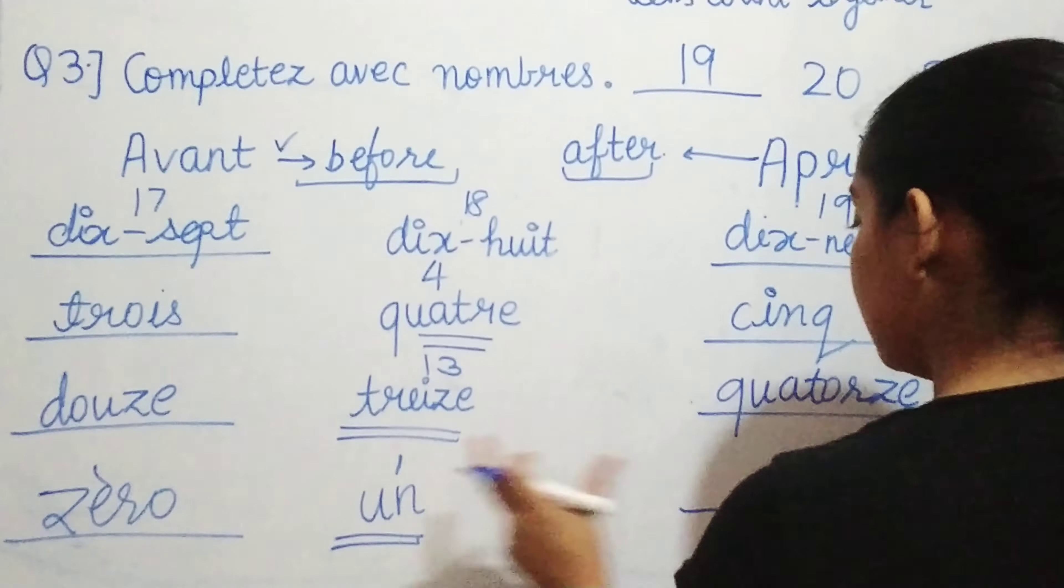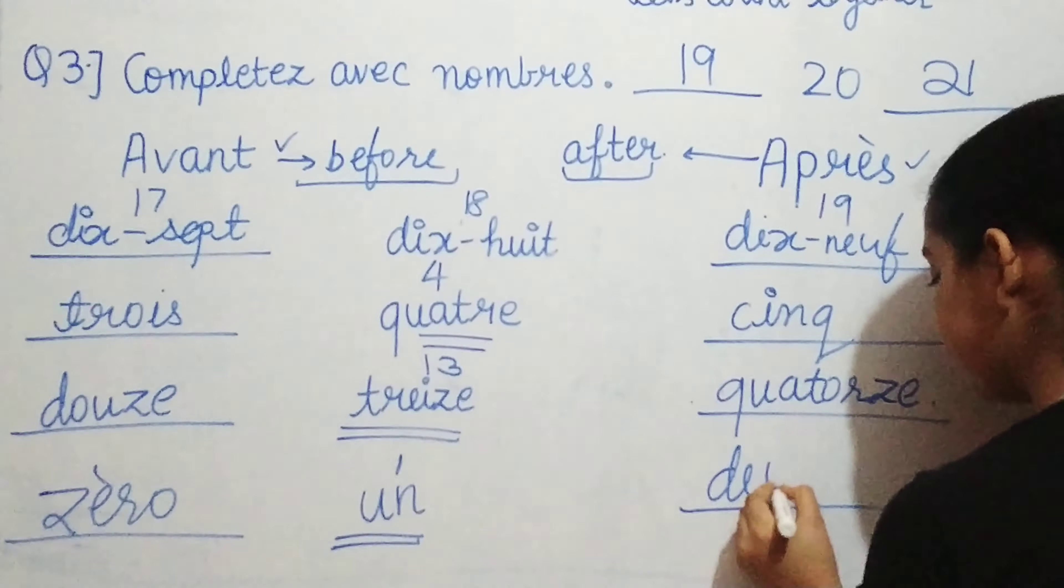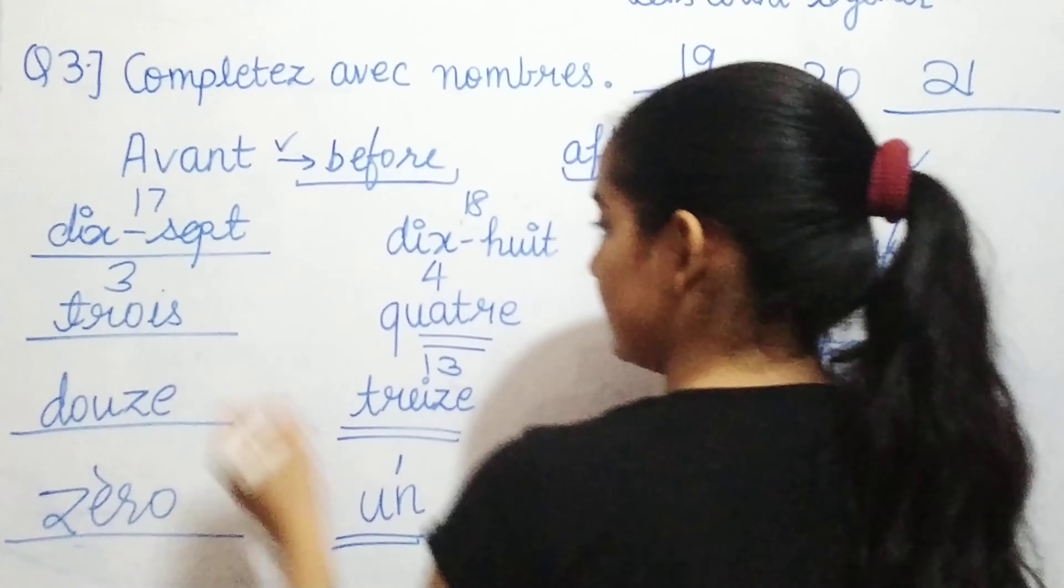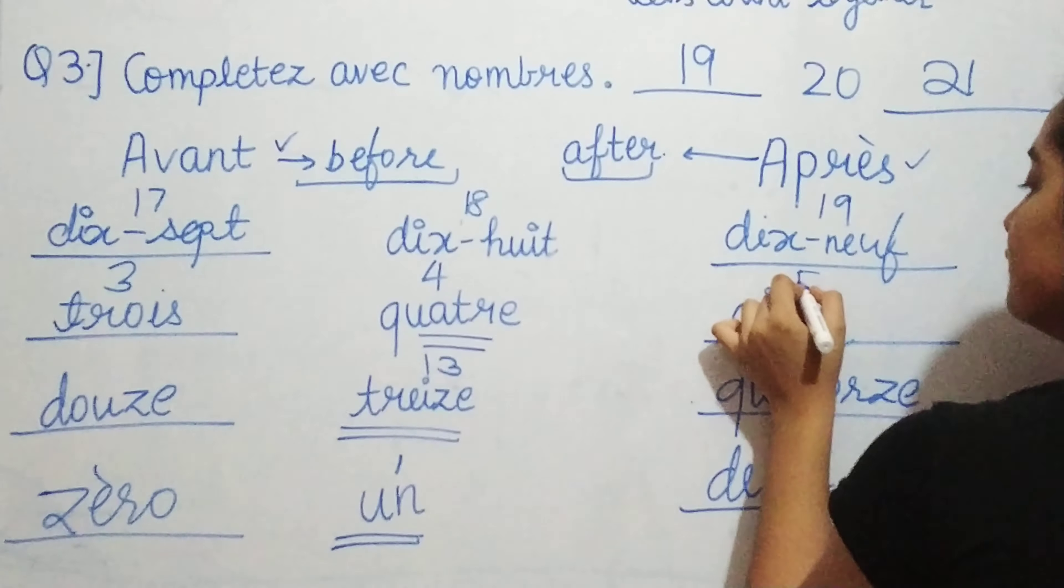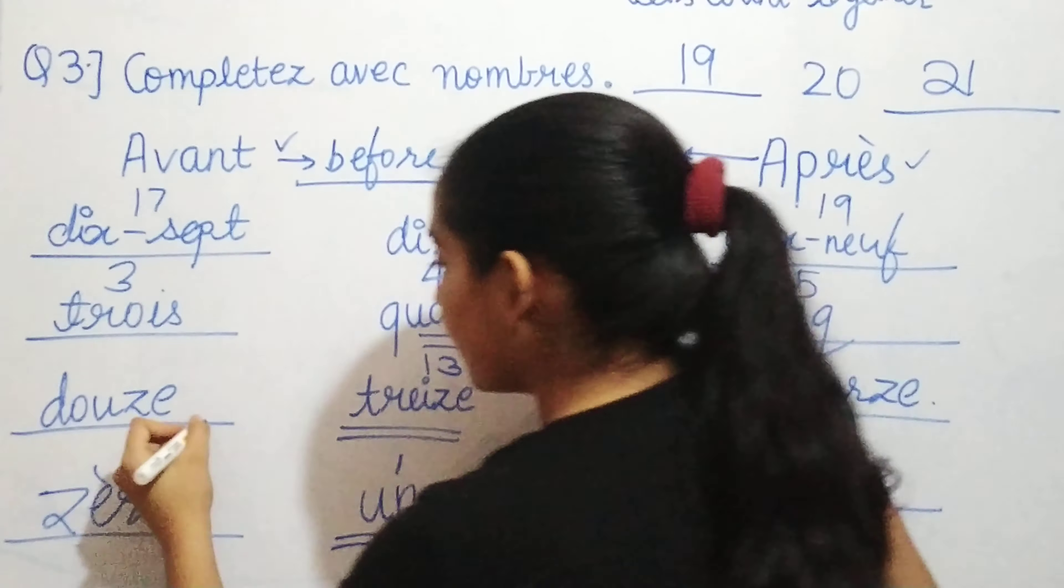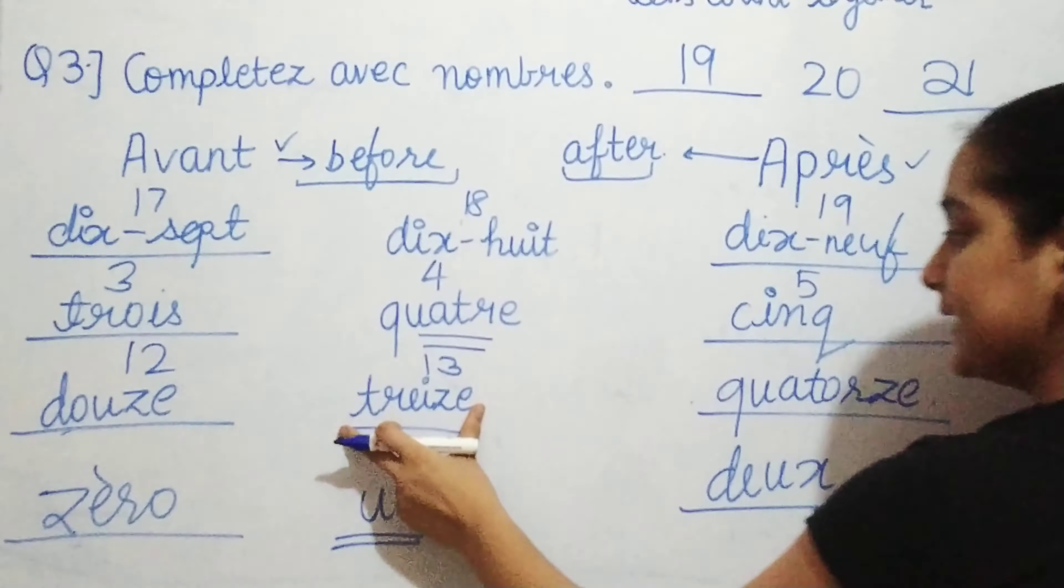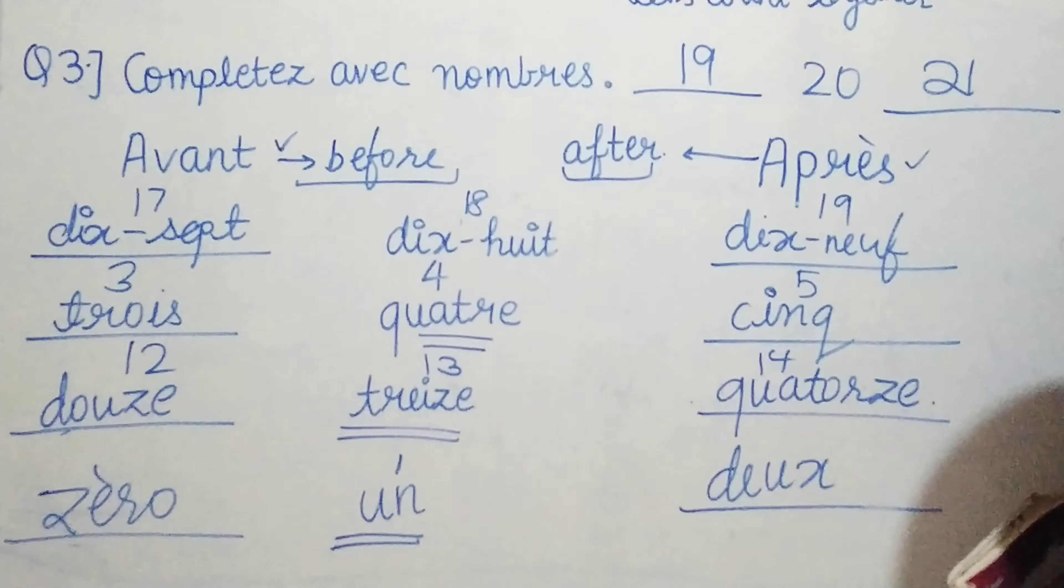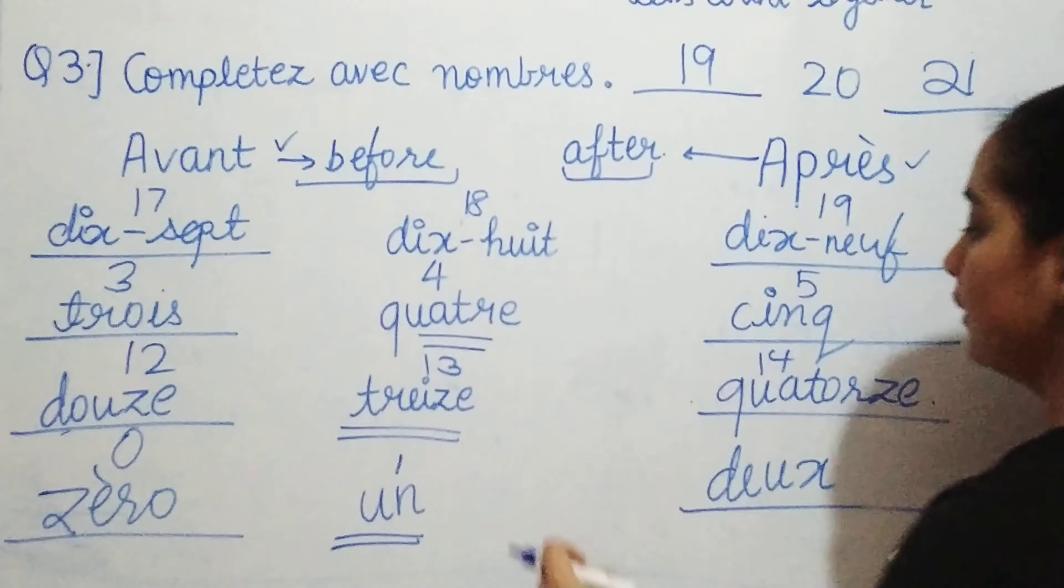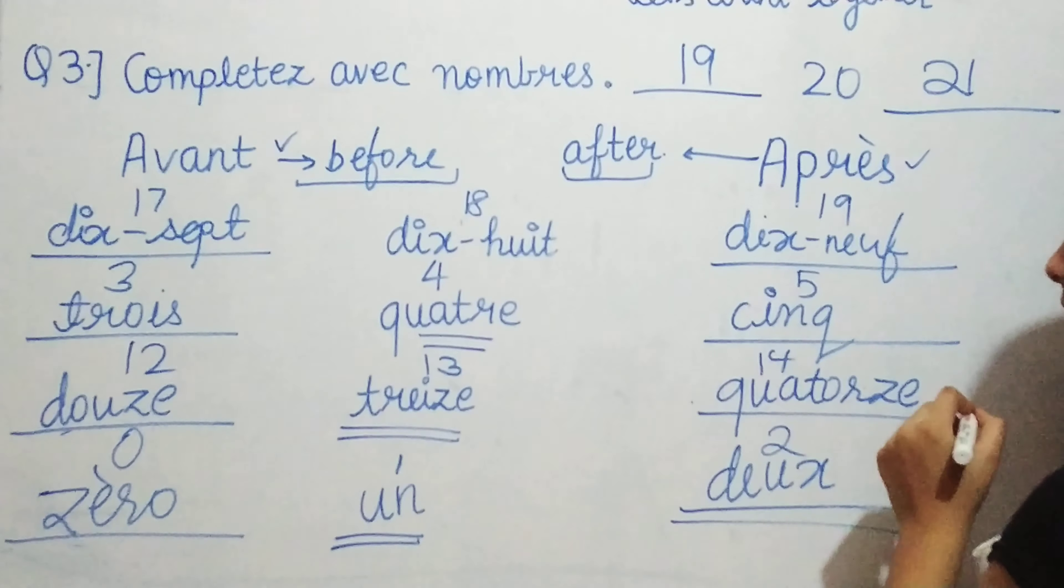Before un, this is what? This is very simple. This is one. What comes before one? Before one is zero. So we'll write zéro. Zéro will have an accent like this. And after one, what comes? After one comes two. So just write deux.